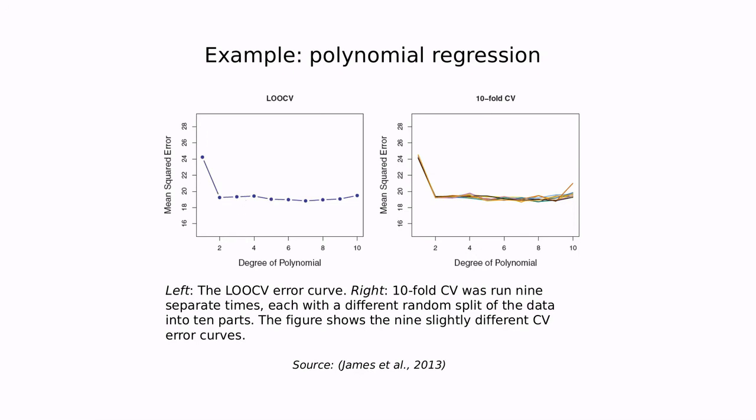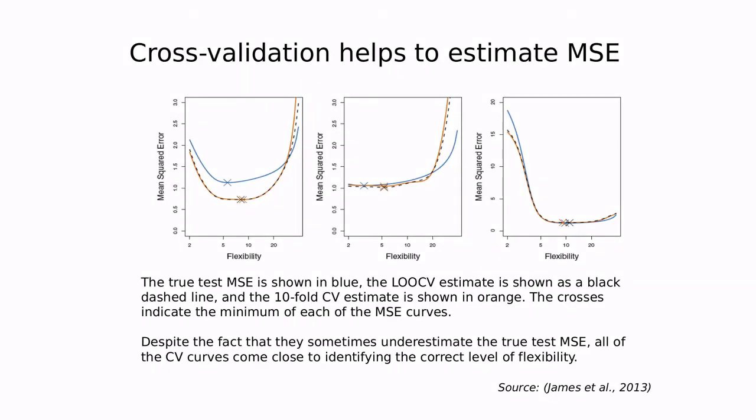Cross-validation also helps us to estimate the real mean square error. Actually, we don't know the real error, because we don't have an infinite number of observations. But here you can see the blue one is the one in which we assume that we know all the information about the data set. And then the orange and the black one here are leave-one-out and tenfold cross-validation. We're identifying more or less the region of parameters in which we have the most robust model. We are identifying properly the level of flexibility of our model.